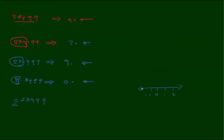For values between 0 and 1, the characteristic is minus 1 or minus 2. This is the characteristic: it is minus 1, which is minus 1.